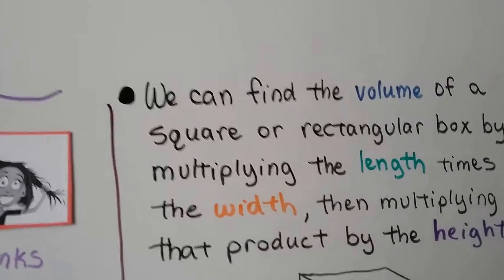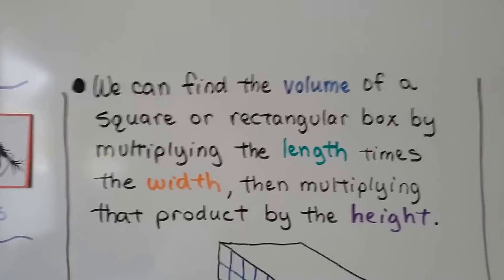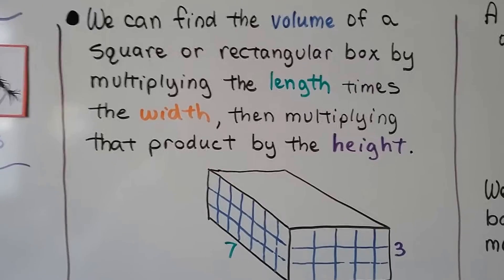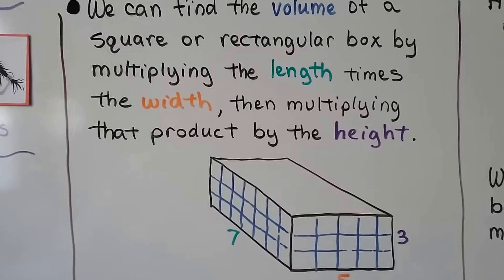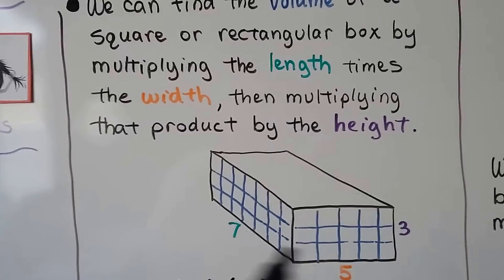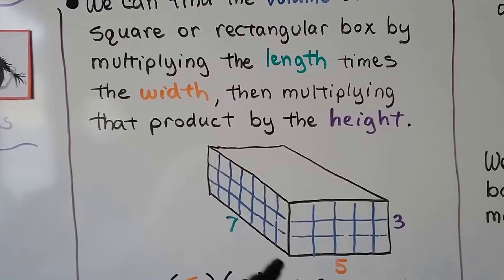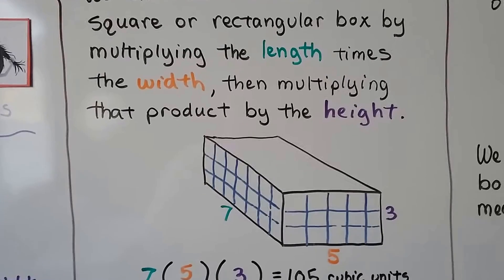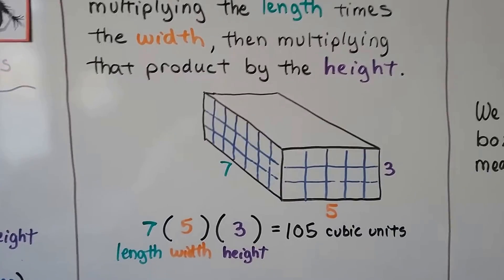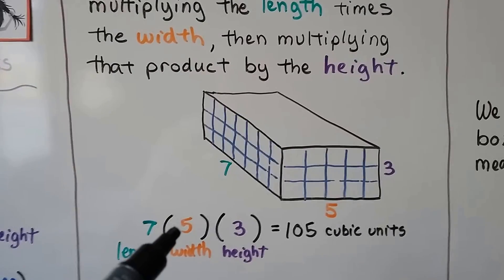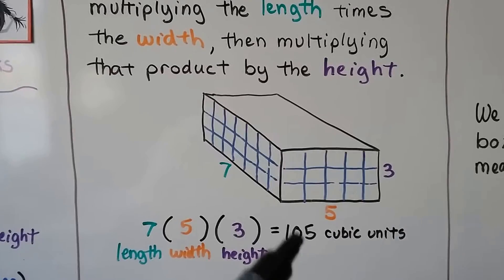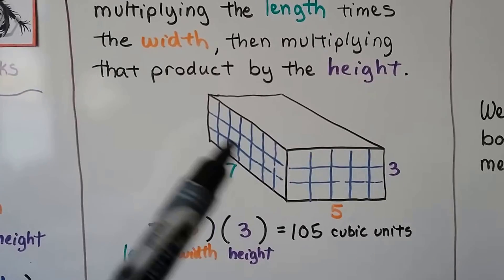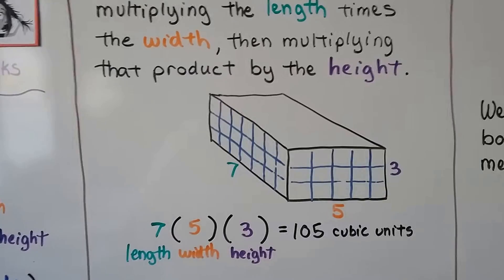We can find the volume of a square or rectangular box by multiplying the length times the width then multiplying that product by the height. So here we've got this rectangular box and it's seven feet in length, it's five feet in width, and its height is 3. We do the 7 times 5 which is 35. We multiply that by 3 and we get 105 cubic units. So there would be 105 of these cubes that would fit in that box.